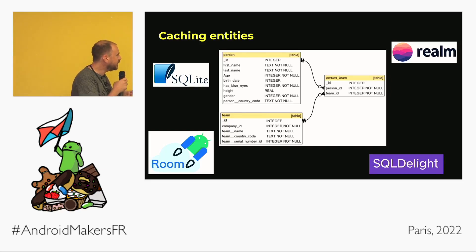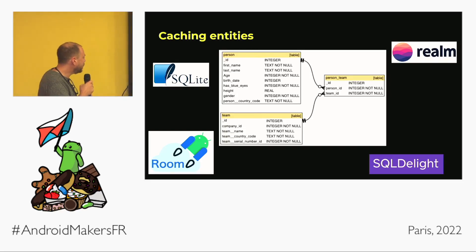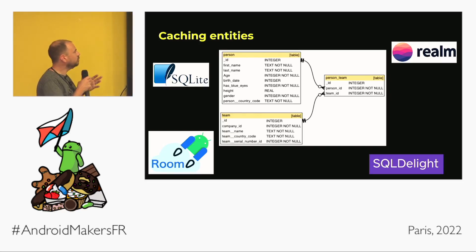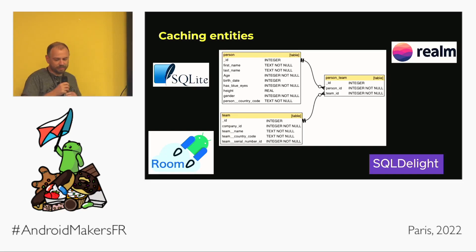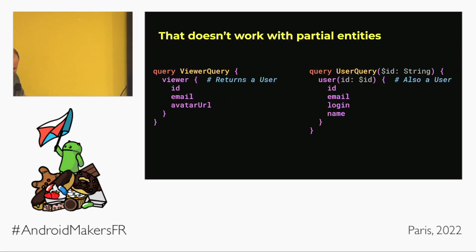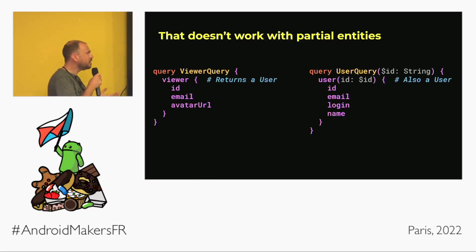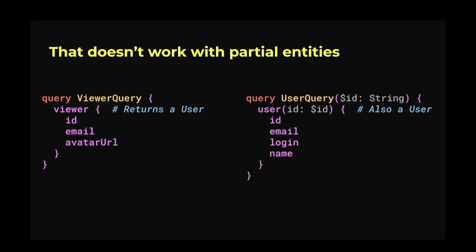You could use an ORM on top of that to help, but usually you would do this mapping manually. The thing is that doesn't really work well with GraphQL, because as we said, you don't really get full entities in your responses — you get only the fields requested.